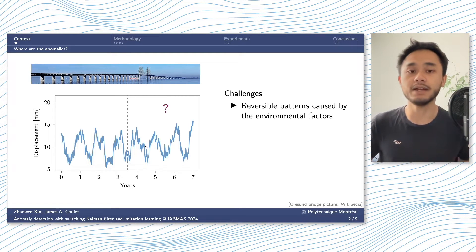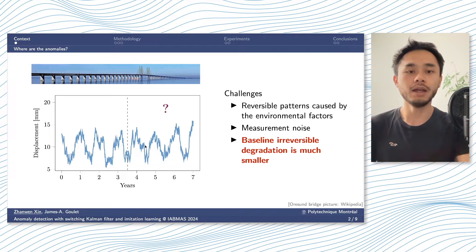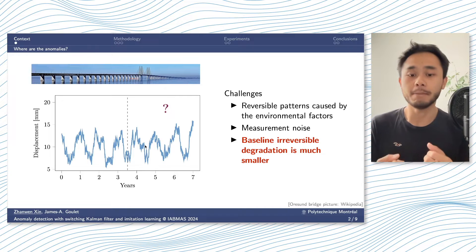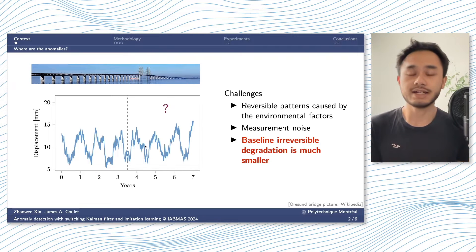The first one is that the time series in practice are usually overlapped by reversible patterns caused by environmental factors, as well as measurement noise. Most of the time, the scale of the reversible patterns and the noise is much larger than the baseline change that we want to detect. In the next methodology session, we will see how we can use switching Kalman filter and imitation learning to tackle these challenges.